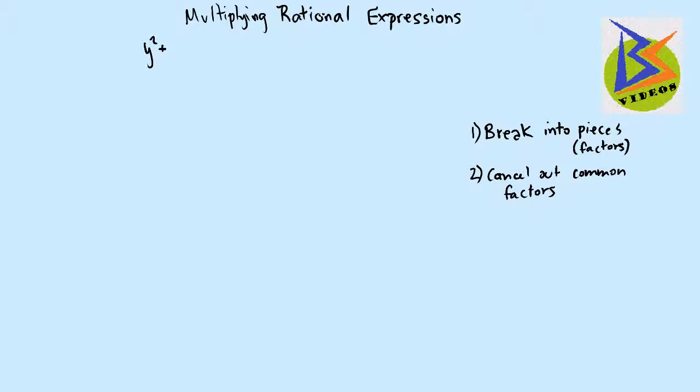So let's take a look at the problem of y squared plus 3y cubed over y squared minus 4 times 2y plus y squared over y plus 4y squared plus 3y cubed.